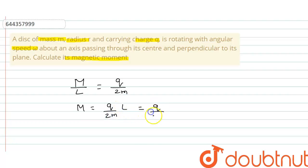So this is equal to Q upon 2m. Angular momentum is equal to I into omega, where I is moment of inertia. And in case of disk with axis passing through center perpendicular to the plane...